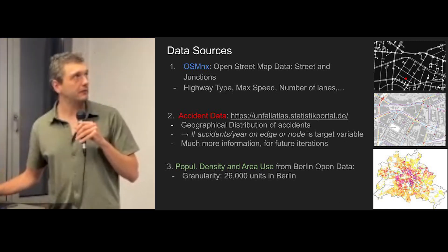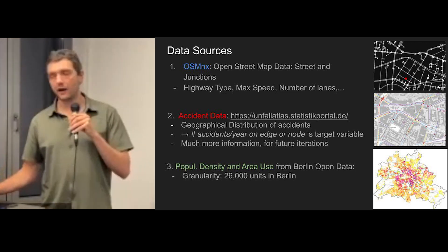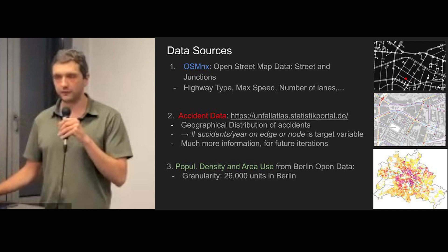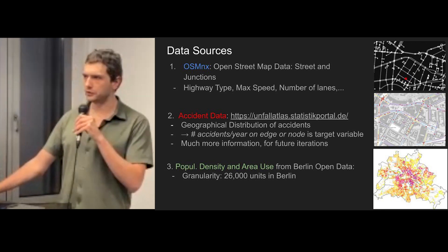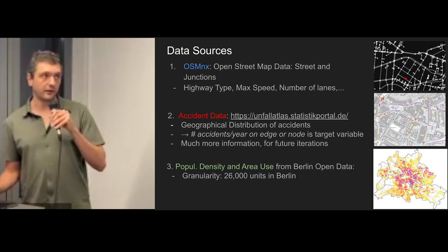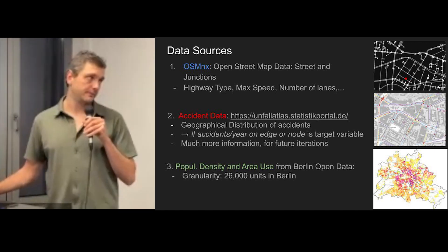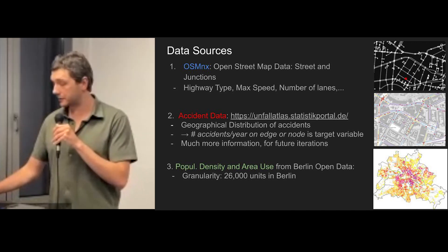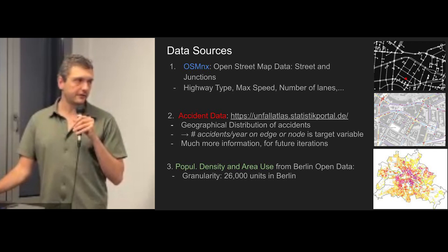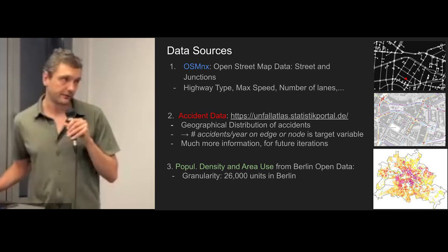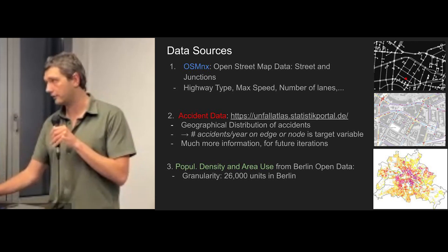We have quite an array of data. First, we use OSMnx data — OpenStreetMap data — which gives us street and junction data including highway type, maximum speed, and other useful information. Second is the accident data itself: the Deutsche Bundesamt für Statistik provides this for all of Germany, as well as Berlin open data, and this constitutes our target variable — accidents per year on a given node or edge. Third, we have global features such as population density and area use from the Berlin open data platform, with a granularity of about 26,000 units across Berlin.